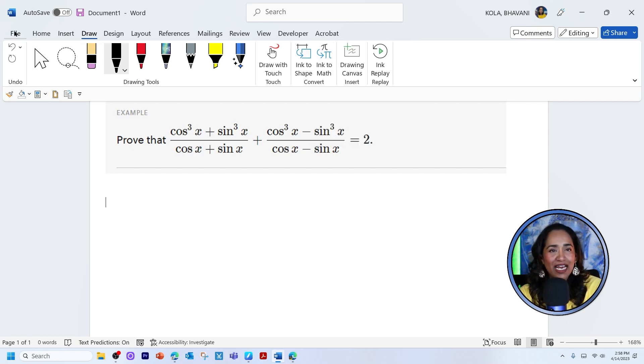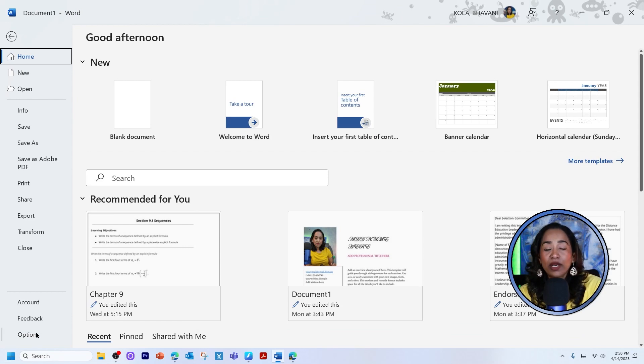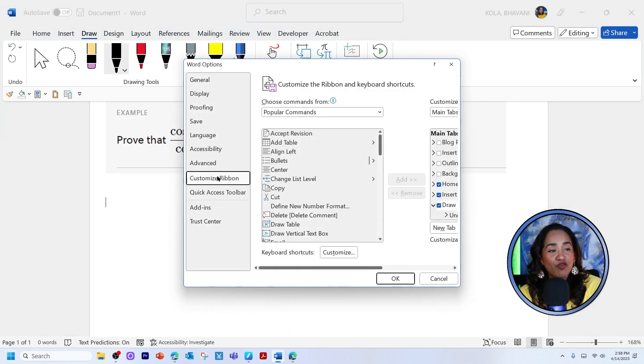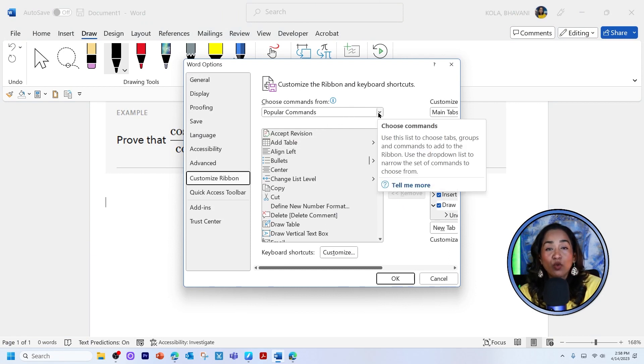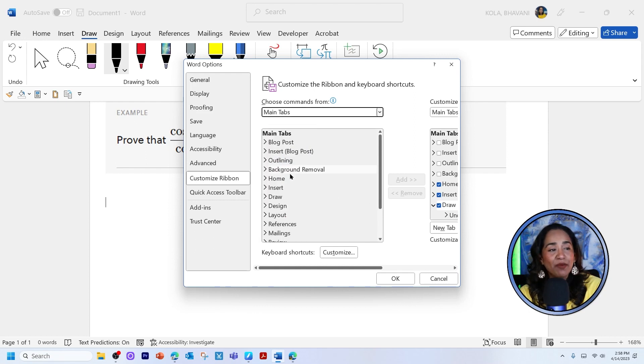But if you don't have this draw tab, this is what you do. You click on your files, scroll all the way down to options. In here, you're going to click on customize ribbon. You will go all the way on the top here and scroll and make sure you're on main tabs. And here you will click on your draw tool, click add and click okay.